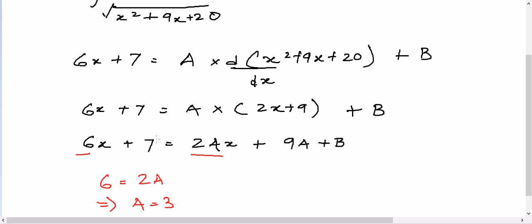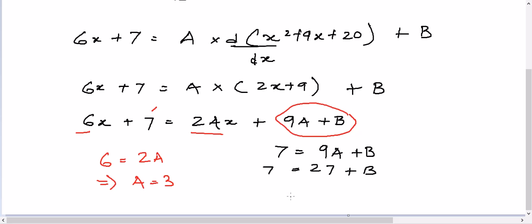And here as you can see, we have a 7. We'll compare the constant now. Here it is 7 and here it is 9a plus b, right? So 7 is equal to 9a plus b. A is 3, guys. So it will be 7, right? So it is equal to 9a plus b. So b is, that's a narrow way. Let me write it properly. So b will be minus 20, right?